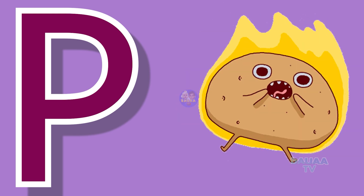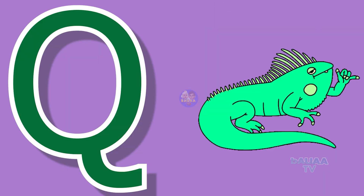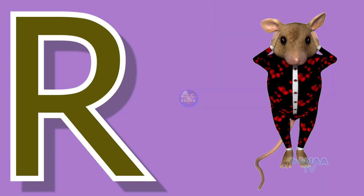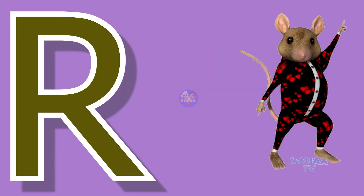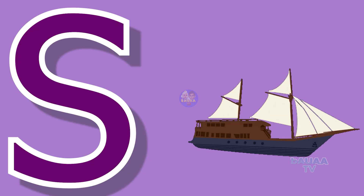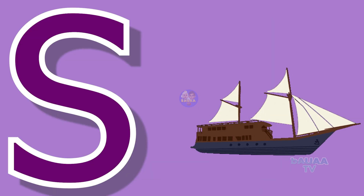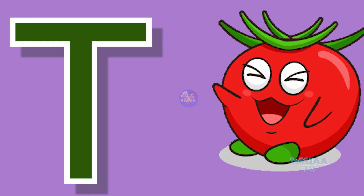P for potato, Q for quill, R for rabbit, S for sheep, T for tomato.